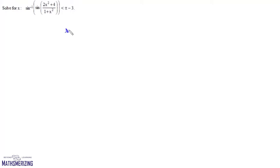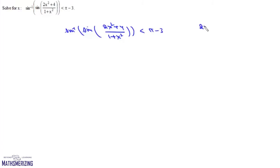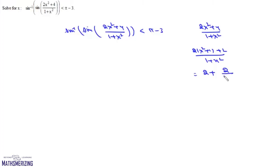The question is to solve for x: sin⁻¹(sin((2x² + 4)/(1 + x²))) < π − 3. Now if we look at (2x² + 4)/(1 + x²), we can rewrite this as (2x² + 1 + 2 + 1)/(1 + x²), which simplifies to 2 + 2/(1 + x²).